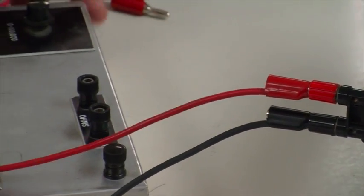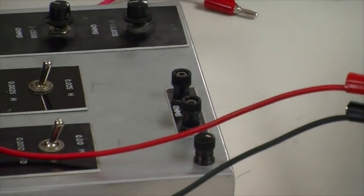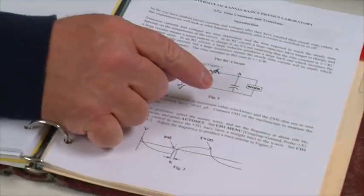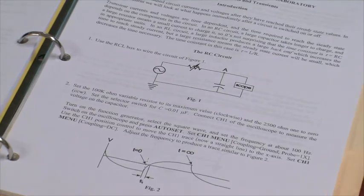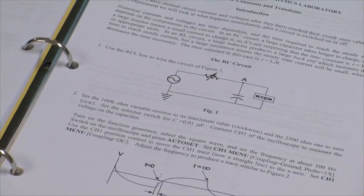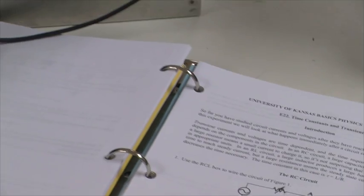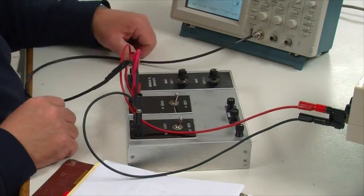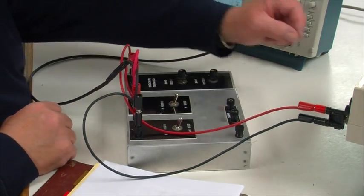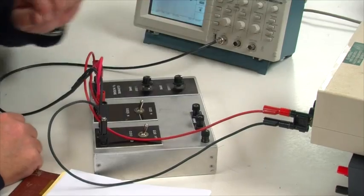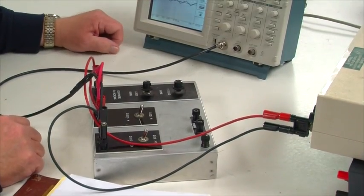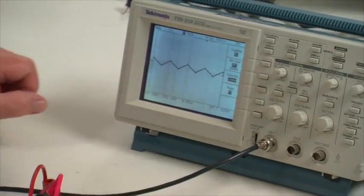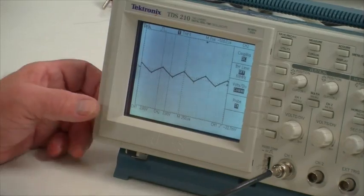Now, we want to be measuring the voltage across the capacitor in this case. So that means we need our voltmeter, the oscilloscope, right here. Let me turn on the function generator and turn off channel 2.